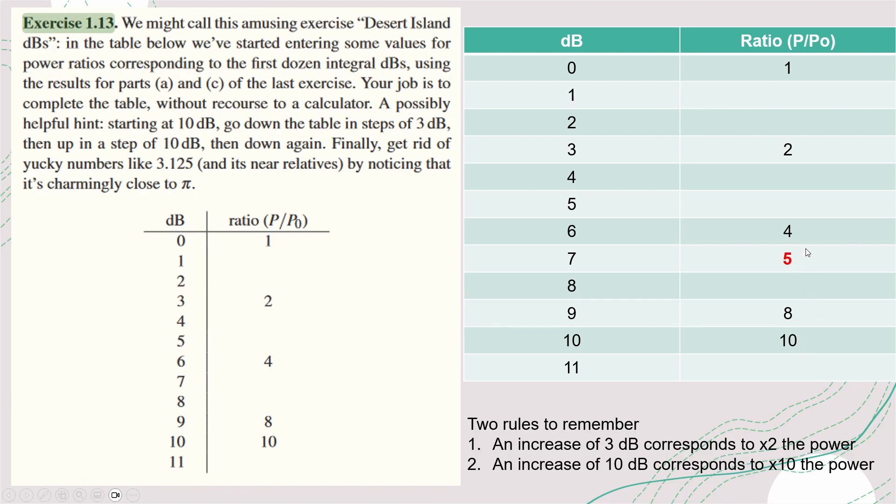Doing the same thing again, decreasing by 3 dB we can go to 2.5 and then doing the same thing again, 3 dB decrease gives us 1.25. Now the ratio is 1.25 when dB is equal to 1.